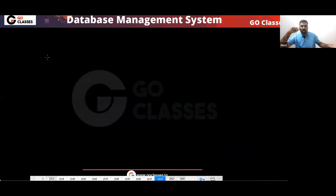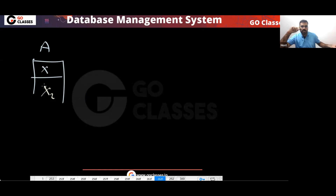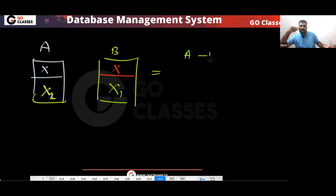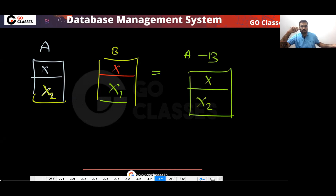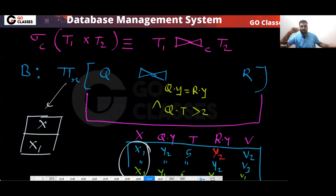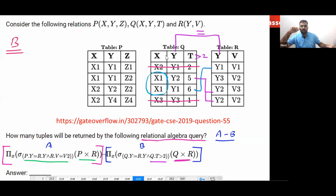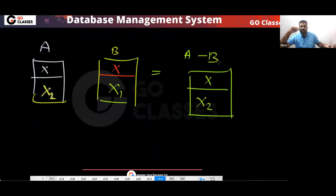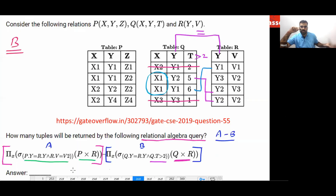Now tell me A minus B. In A you are getting X2, and in B you are getting X1. So what will A minus B be? That will be X2. So anyway, your focus is only on the value of X. Your answer will be how many tuples — only one tuple. So your answer is only one tuple will be there.